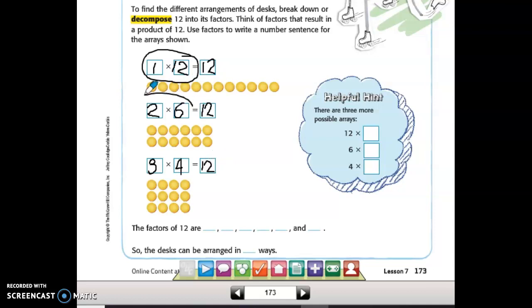So 1 times 12, 2 and 6, and 3 and 4 are all the factors of 12. So 1, 2, 3, 4, 6, and 12 are the factors of 12. So the desks can be arranged in six different ways.